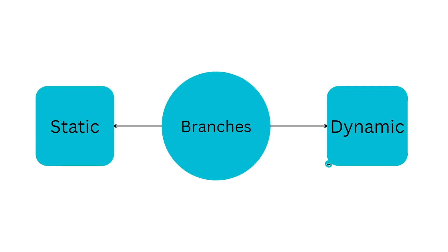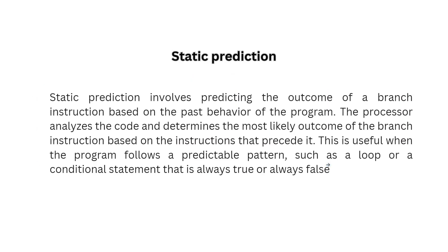Static prediction involves predicting the outcome of a branch instruction based on the past behavior of the program. The processor analyzes the code and determines the most likely outcome of the branch instruction based on the instructions that precede it. This is useful when the program follows a predictable pattern, such as a loop or a conditional statement that is always true or always false.